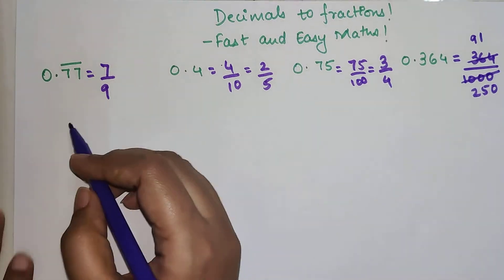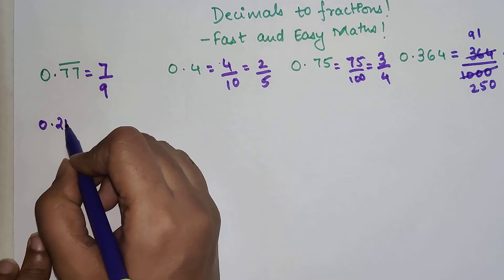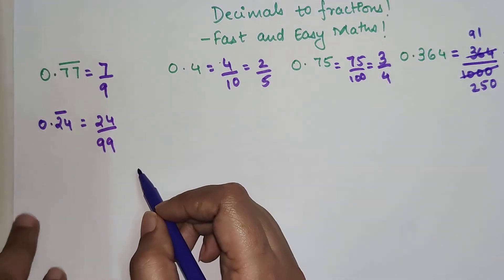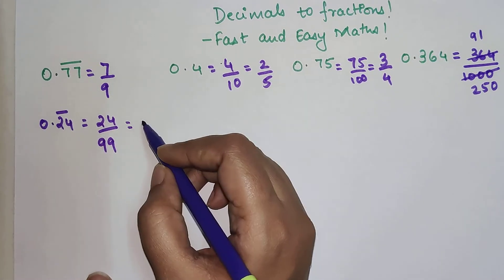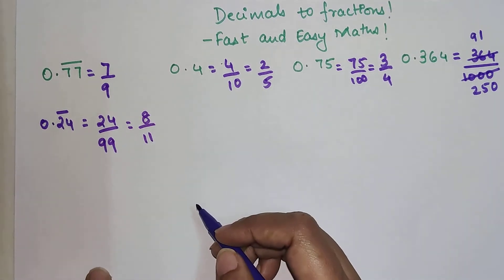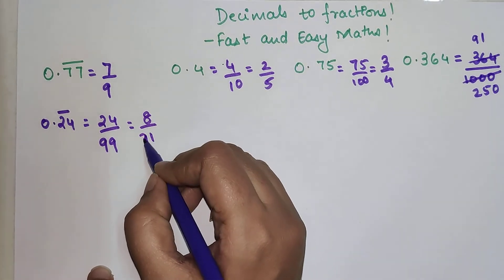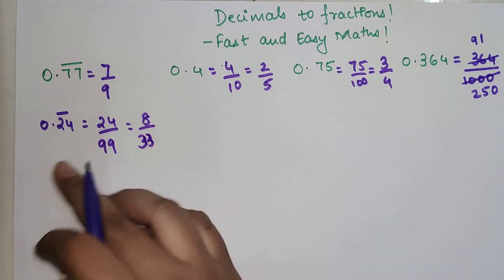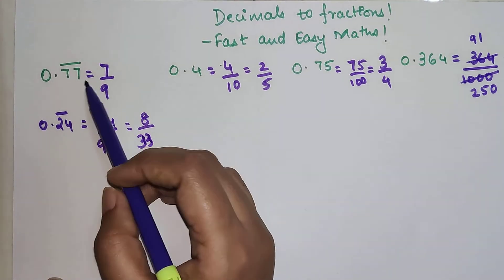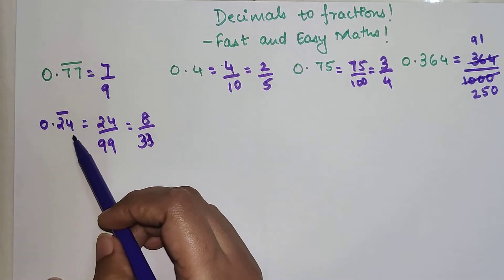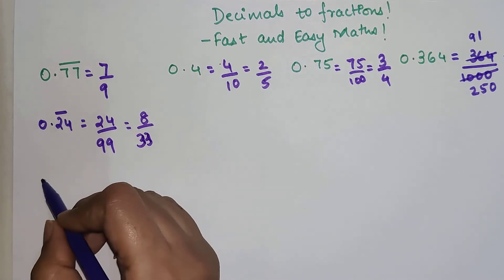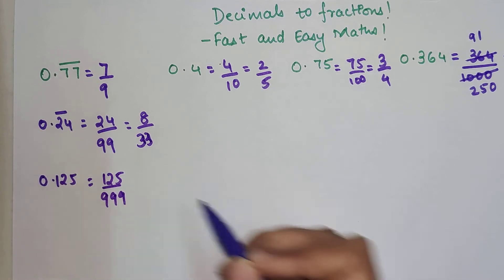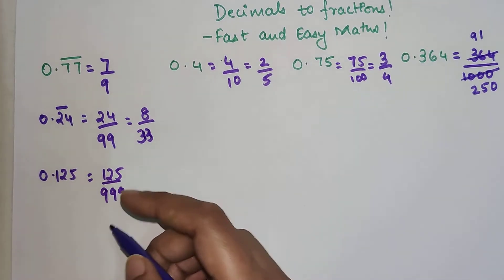If in case you had 0.24 and 24 was getting repeated, you will write 24 upon 99. Both of them are going in 3's table, so this will be 8 upon 33. This is how you will be doing for those numbers after the decimal point if the numbers are continuously repeating. If there is just single number, you write 7 upon 9. If there are 2 numbers which are repeating itself, then 24 upon 99. If there will be 3 numbers, 0.125 repeating, you will write 125 upon 999.